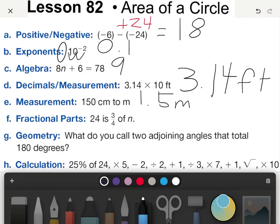Two adjoining angles that total 180 degrees would be supplementary angles.